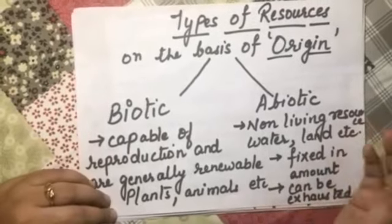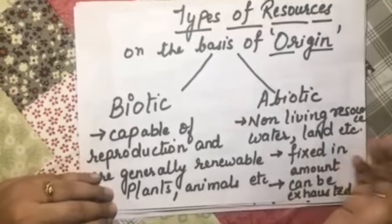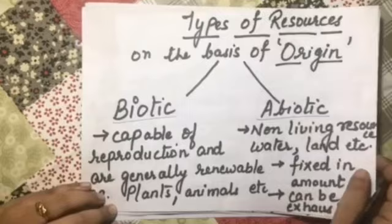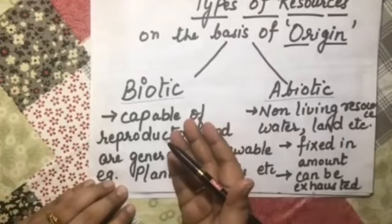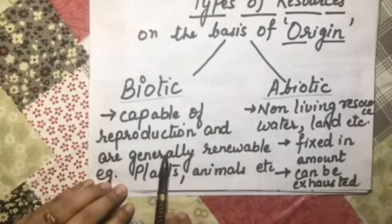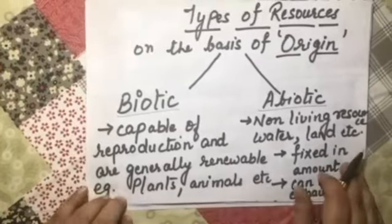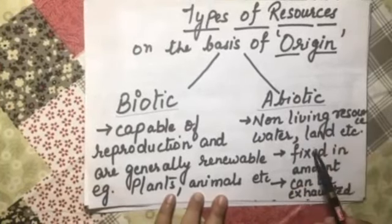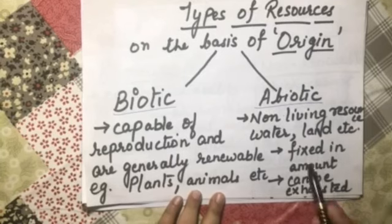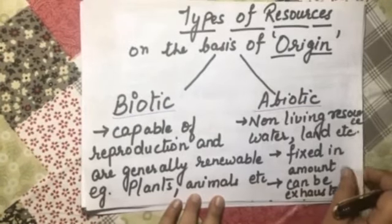Next topic: types of resources on the basis of origin. There are two types — biotic resources and abiotic resources. Biotic resources are related to life, meaning they are capable of reproduction and are generally renewable. Examples are plants, animals, and human beings. Abiotic resources are non-living resources; they are fixed in amount and can be exhausted. Examples include water and land.